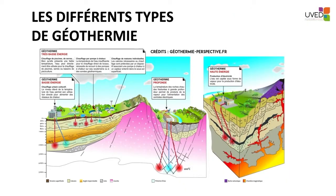This graph illustrates the main geothermal energy production categories. The very low energy category uses a low temperature resource of approximately 10 to 20 degrees Celsius, typically from shallow depth aquifers only a few meters deep. This category is used with an amplifier — a heat pump.